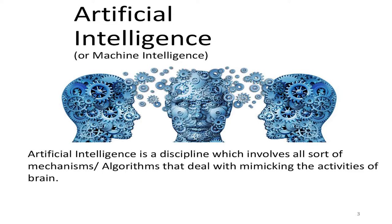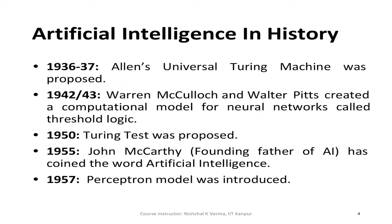When we talk of artificial intelligence, or machine intelligence, let me briefly define what artificial intelligence is. Artificial intelligence is a discipline which involves all sorts of mechanisms and algorithms that deal with mimicking the activities of our brain.